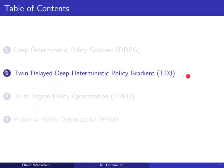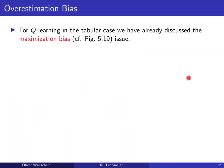DDPG has issues that the Twin Delayed DDPG (TD3) addresses. The first issue is the overestimation bias — also called maximization bias — which we already discussed in tabular Q-learning. In Q-learning, estimates Q-hat with greedy maximization will overestimate true state-action values, because sampling from a stochastic process and then maximizing will produce values unrepresentative of the mean.